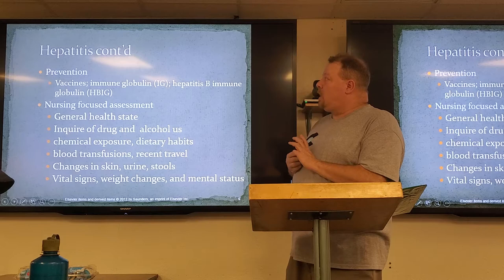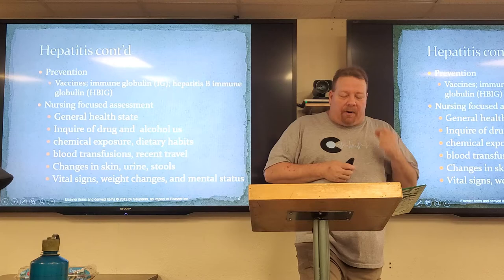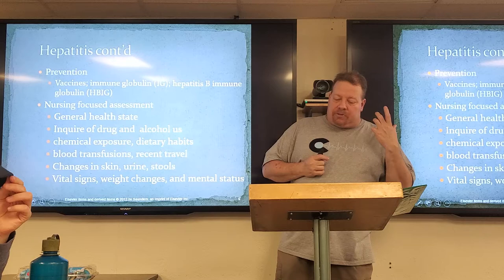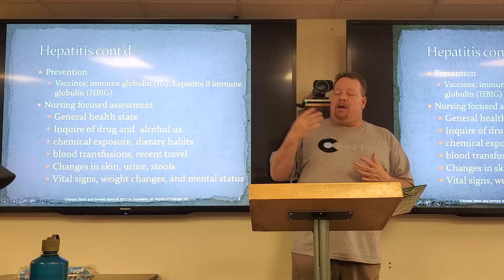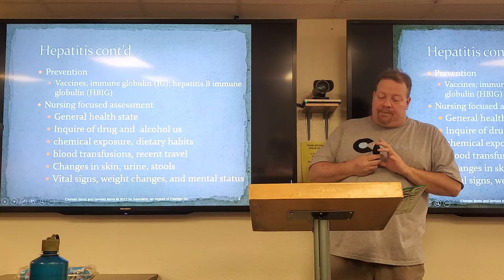Prevention includes vaccines, immunoglobulin, and hepatitis B immunoglobulin (HBIG). We're going to do a focused assessment covering general state of health. We're going to inquire about drug use and alcohol use, chemical exposure, dietary habits, history of blood transfusions — because you can still get hepatitis from a blood transfusion — recent travel outside the continental United States, and changes in skin, urine, and stools. Also vital signs, weight changes, and mental status changes.